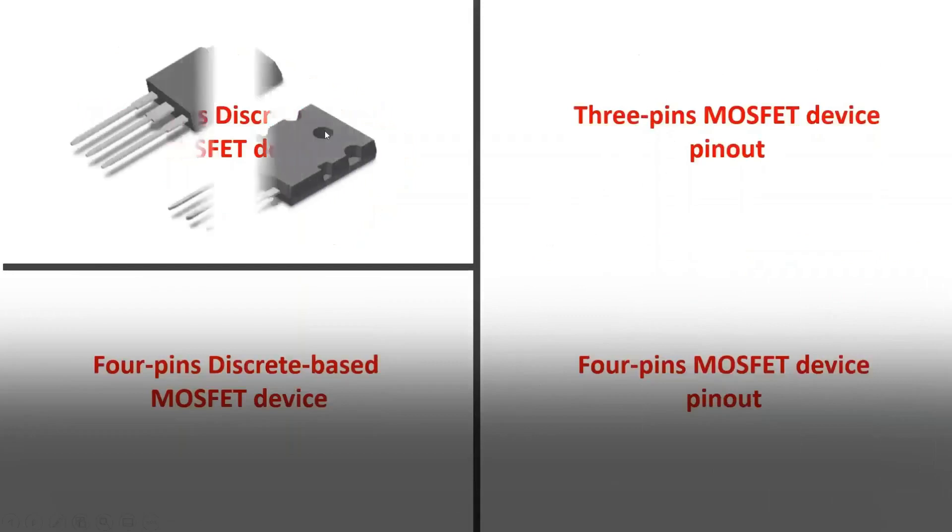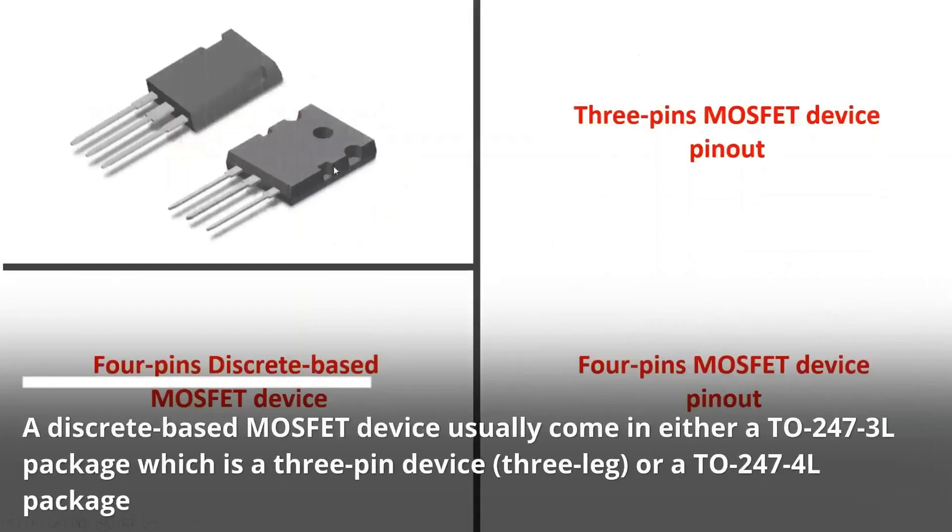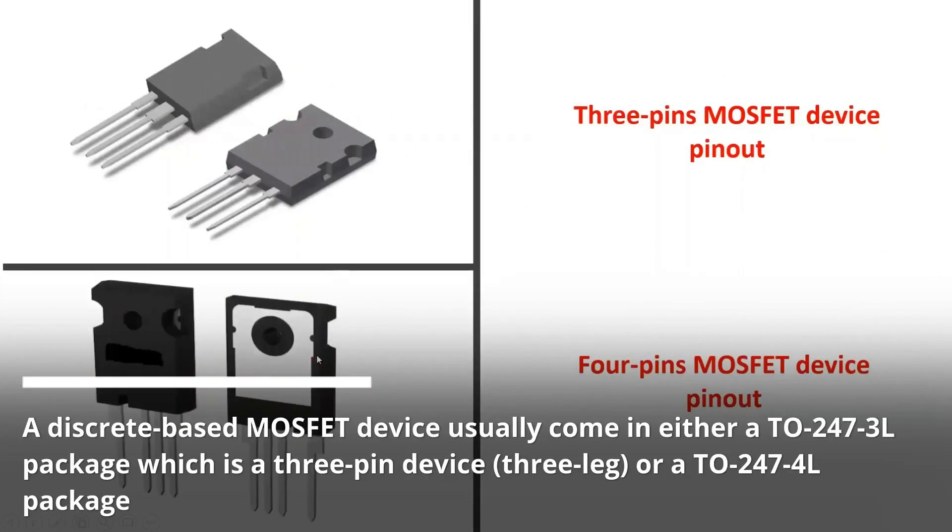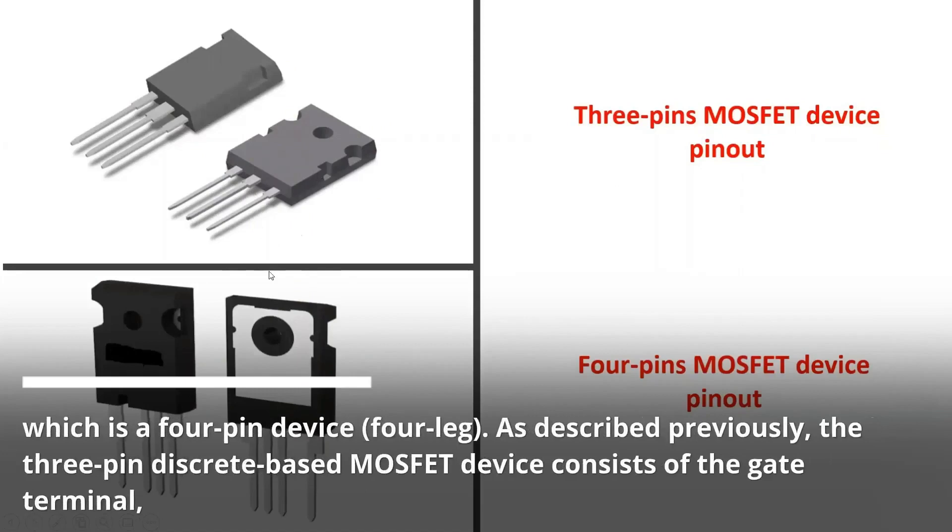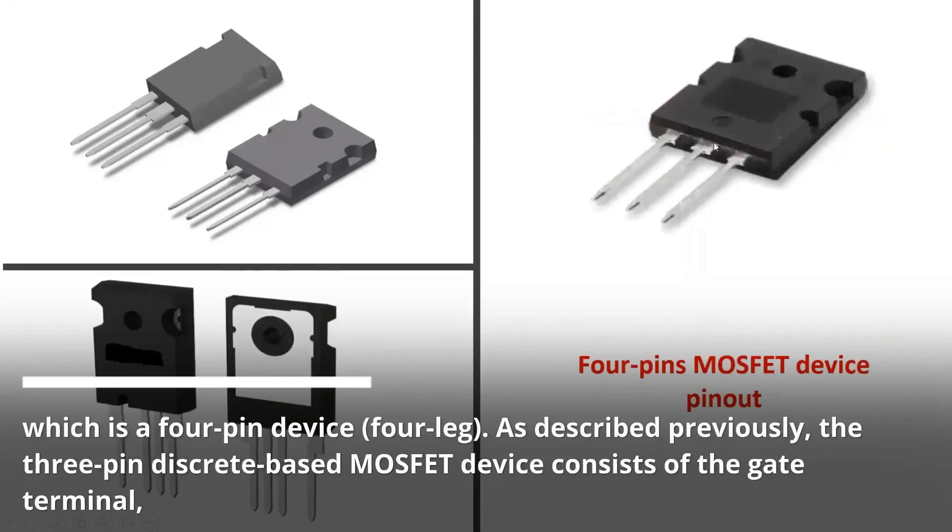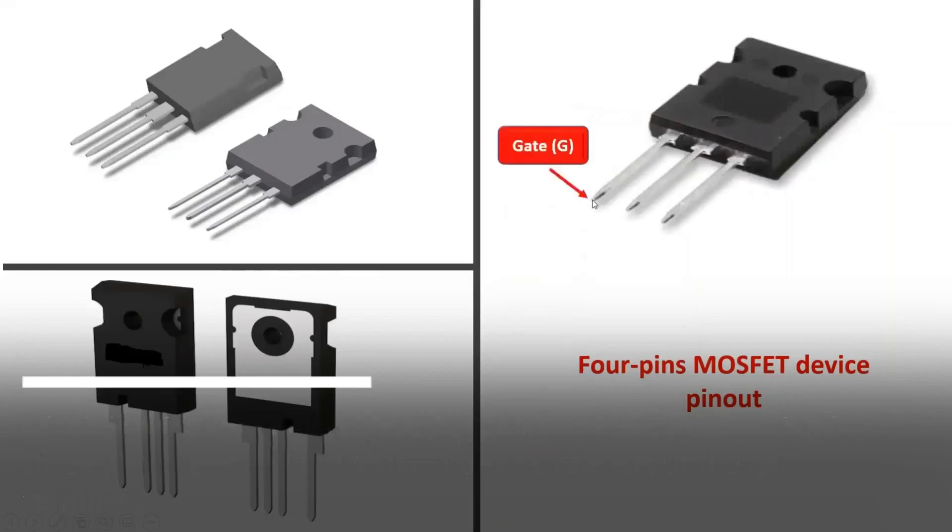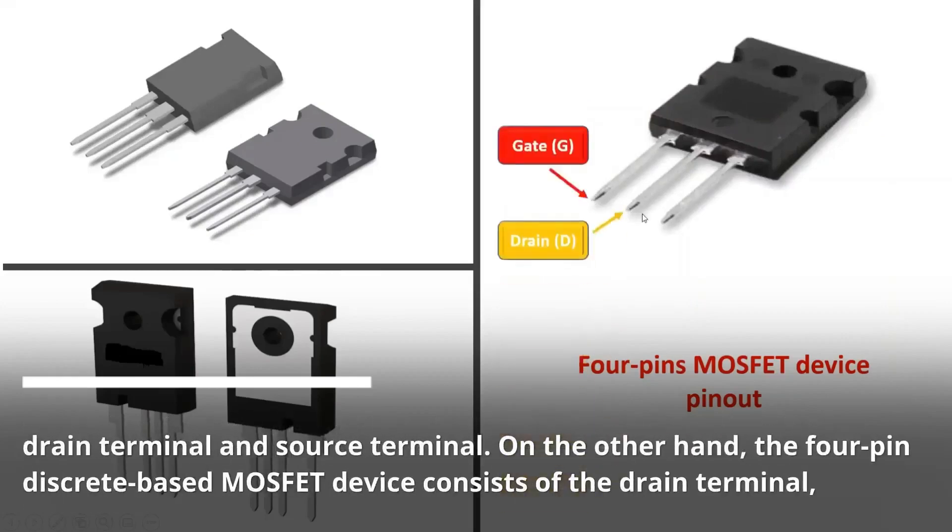A discrete-based MOSFET device usually come in either a TO247-3L package which is a three-pin device, three-leg, or a TO247-4L package which is a four-pin device, four-leg. As described previously, the three-pin discrete-based MOSFET device consists of the gate terminal, drain terminal, and source terminal.